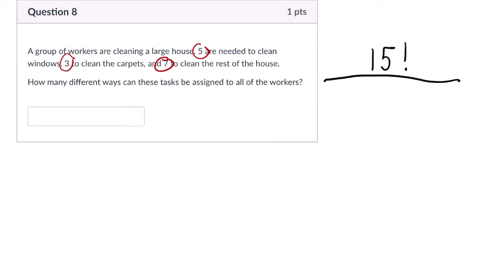But a lot of these sortings are going to be repetitious. So for the first five people that are needed to clean the windows, all the different ways I can arrange those five people that are counted here in 15 factorial are essentially indistinguishable. They don't need to be considered.